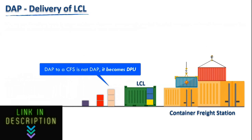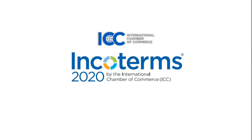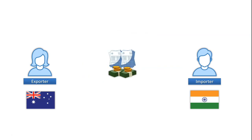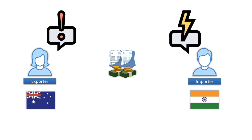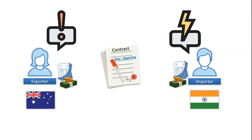So let's begin. Incoterms is the short form of international commercial terms. It's a set of rules designed by the International Chamber of Commerce, the latest version being Incoterms 2020, which became effective from 1st January 2020. In international trade, it is very important to have a clear picture about the distribution of export and import formalities between the buyer and the seller. Without a clear-cut demarcation of responsibilities and cost, a dispute becomes inevitable. With that in mind, the incoterms were designed.